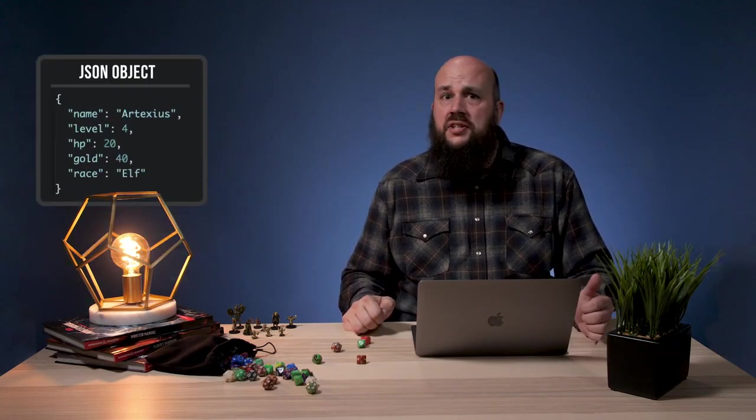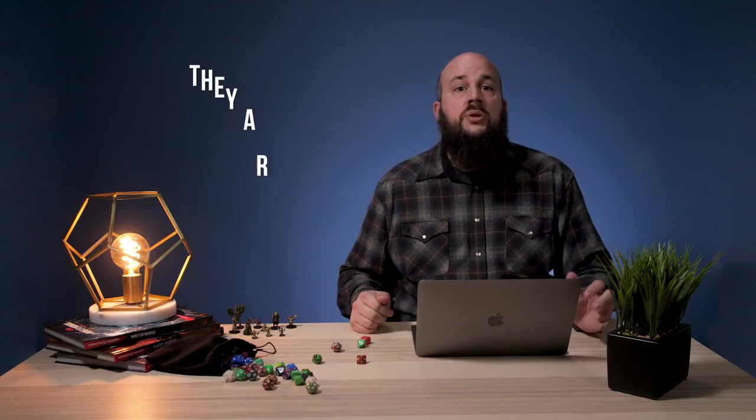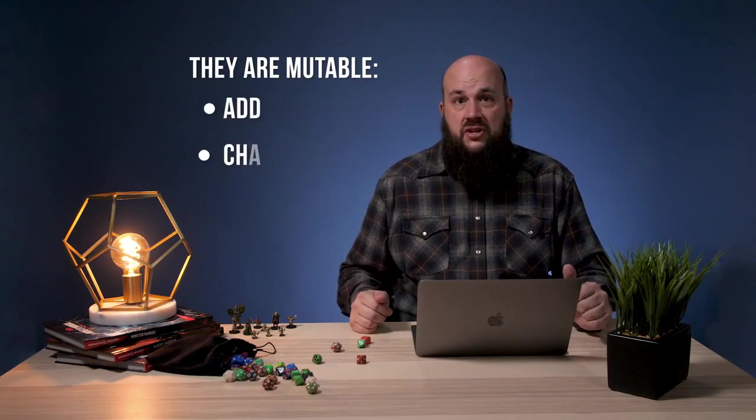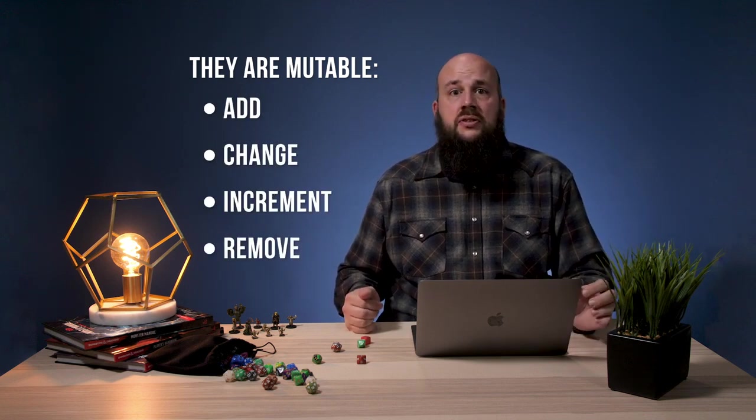Hashes are collections of field value pairs and look a lot like a JSON object, a Java hash map, or a Python dictionary. Redis hashes are also mutable. We can add, change, increment, and remove field value pairs at any time, not just at the initial declaration.